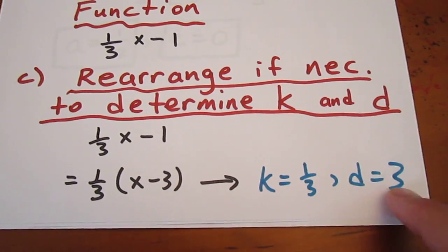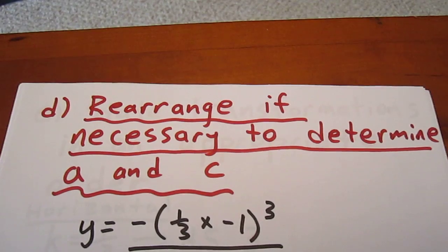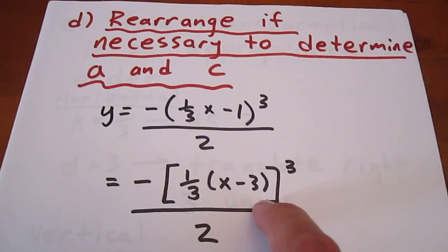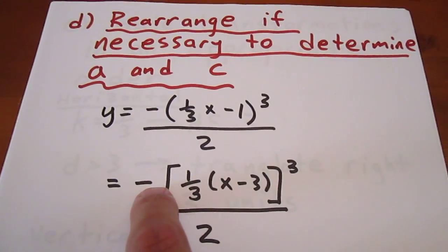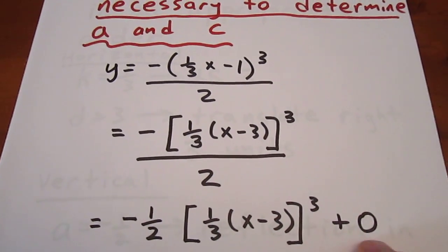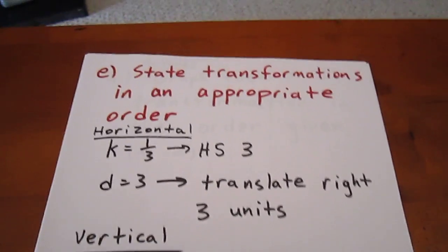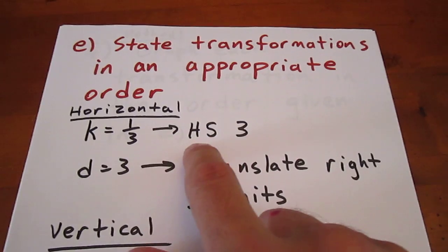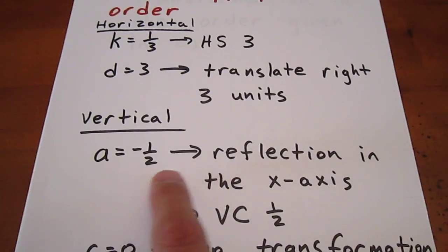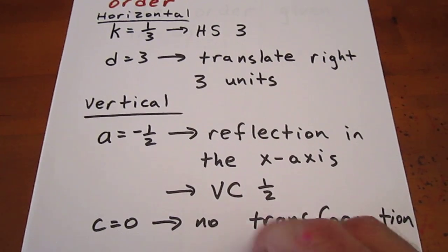The k value of one-third is an indicator of a horizontal stretch, and the d value of three is an indicator of a horizontal translation. Next, we rearrange the equation if necessary to determine the values of a and c. We factor out a one-third to get the argument in a nicer form, and recognize that a negative numerator over two is like multiplying by negative one-half. So our a value is negative one-half and our c value is zero. We have four transformations: horizontally, k equals one-third indicates a horizontal stretch of three; d equals three indicates a translation to the right of three units. Vertically, a equals negative one-half is a reflection in the x-axis followed by a vertical compression by a factor of one-half; and c equals zero is the default setting — no vertical shift.